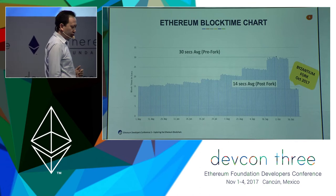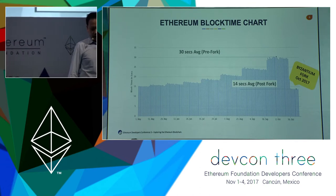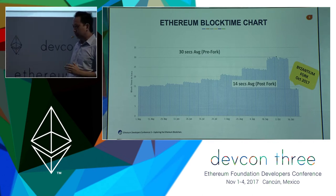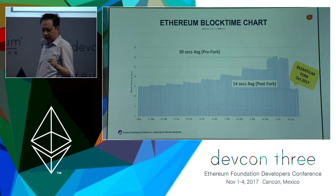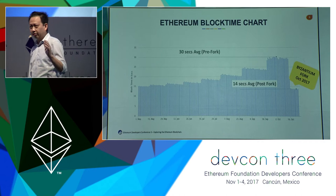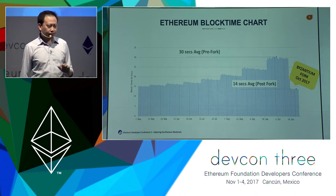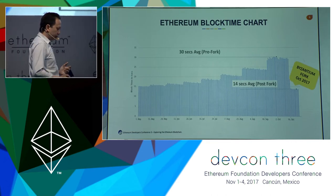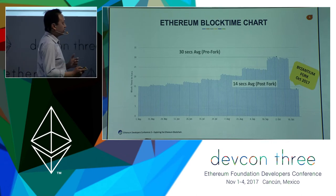As for Ethereum block times, pre-Byzantium fork, block times used to average around 30 seconds. Post-Byzantium hard fork after October 16, 2017, block times have significantly reduced and we're now averaging around 14 seconds. Today, the Ethereum blockchain is processing more transactions at shorter block intervals and with a lower transaction pending queue.